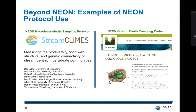Here are two examples of projects that use NEON protocols. Stream Climbs is a collaborative research project involving nine professors across seven universities that investigates how drying affects stream ecosystems in different climates across the southern half of the United States. It integrates NEON stream research sites and macroinvertebrate sampling protocols to document the biodiversity, food web structure, and genetic connectivity of stream benthic invertebrate communities. The second project is the Yellowstone phenology project, where citizen scientists used NEON ground beetle sampling protocols to document beetle phenology in the park.